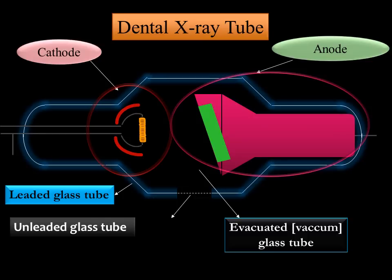The dental x-ray tube has a negatively charged cathode, a positively charged anode, and the glass tube is completely evacuated. It is made of leaded glass tube and a portion of the glass tube is made of unleaded glass window to allow the passage of x-rays that are produced.